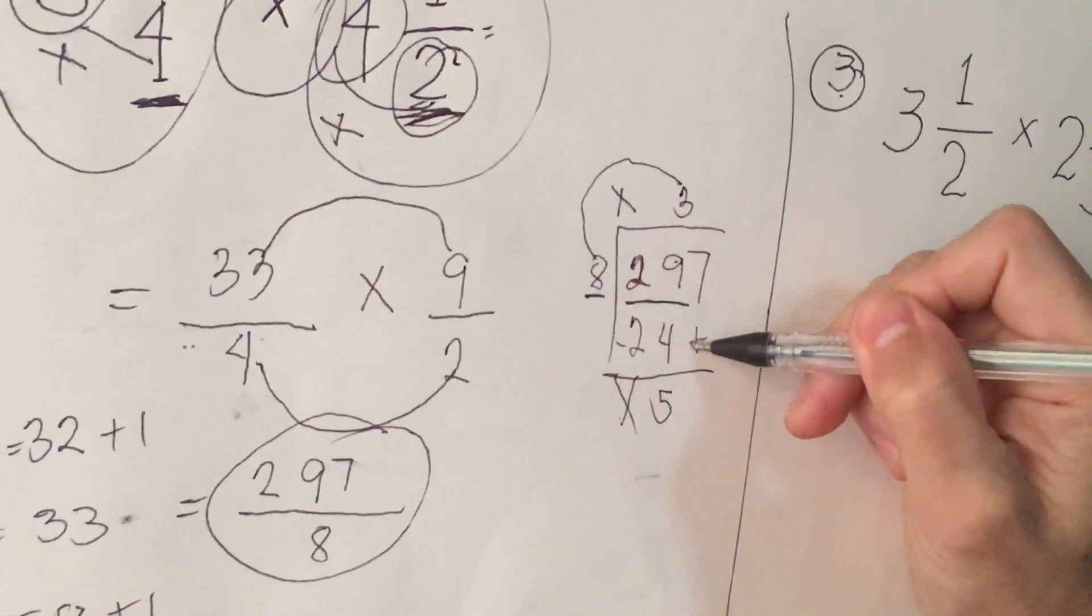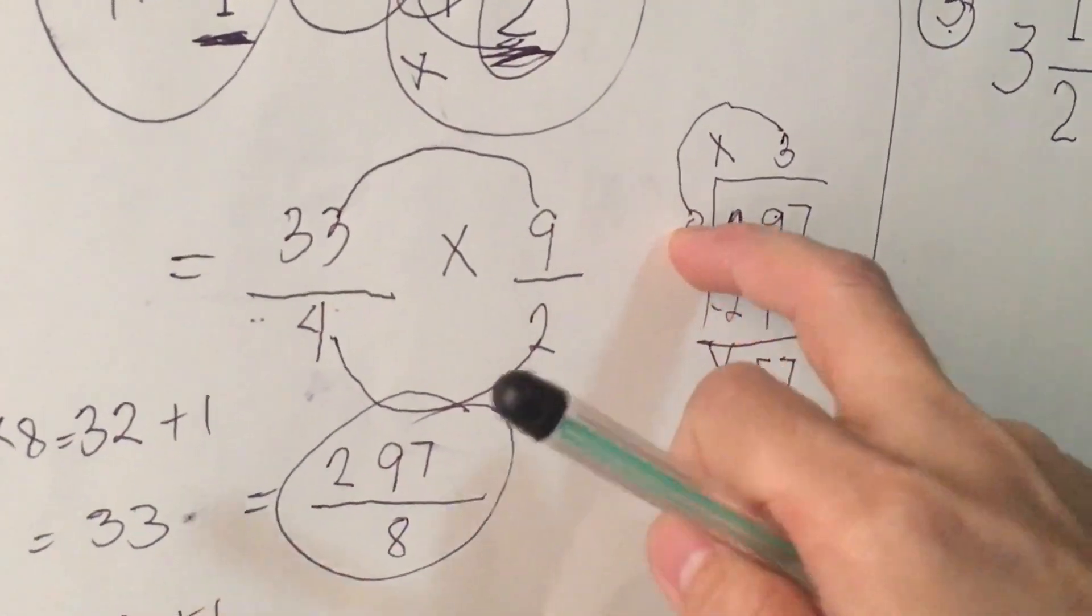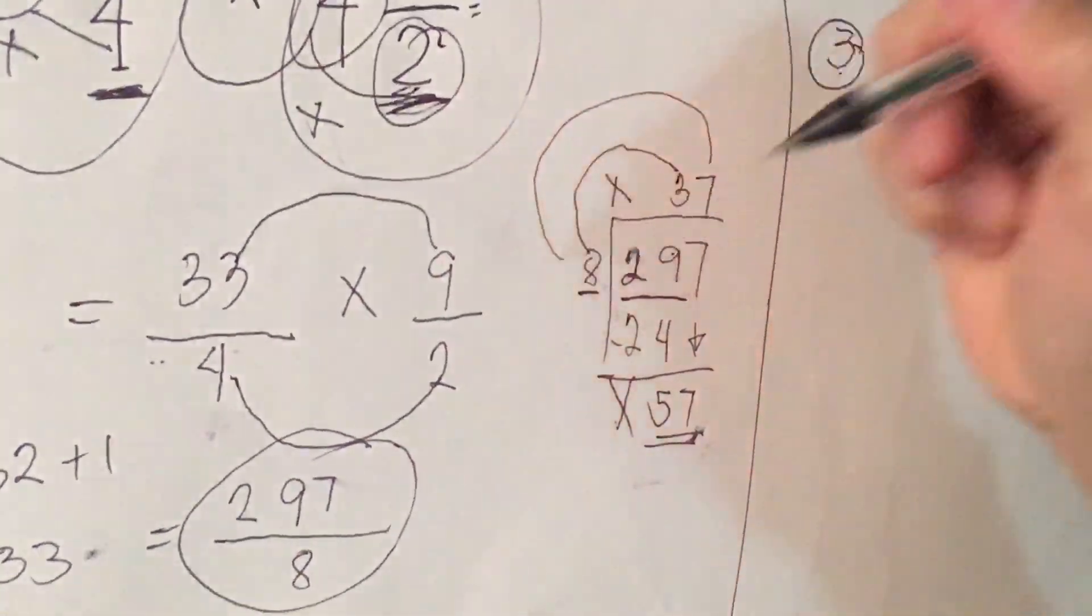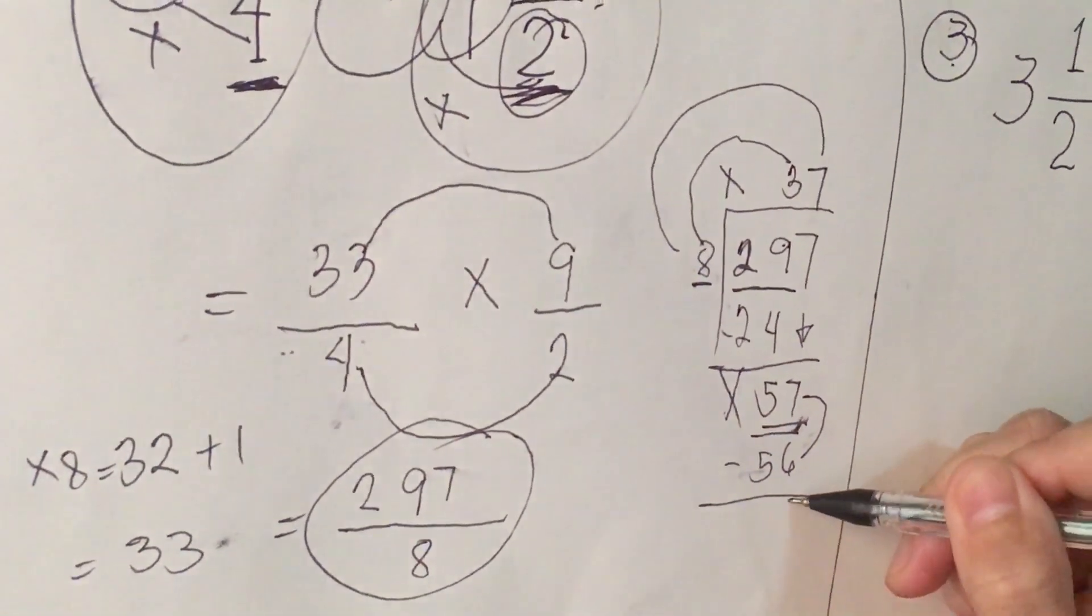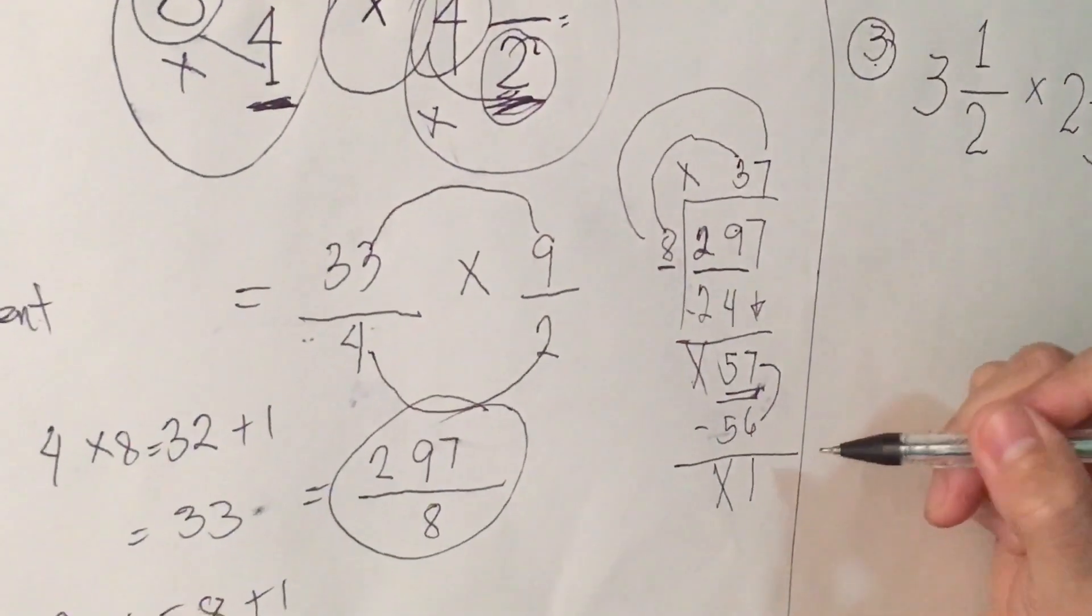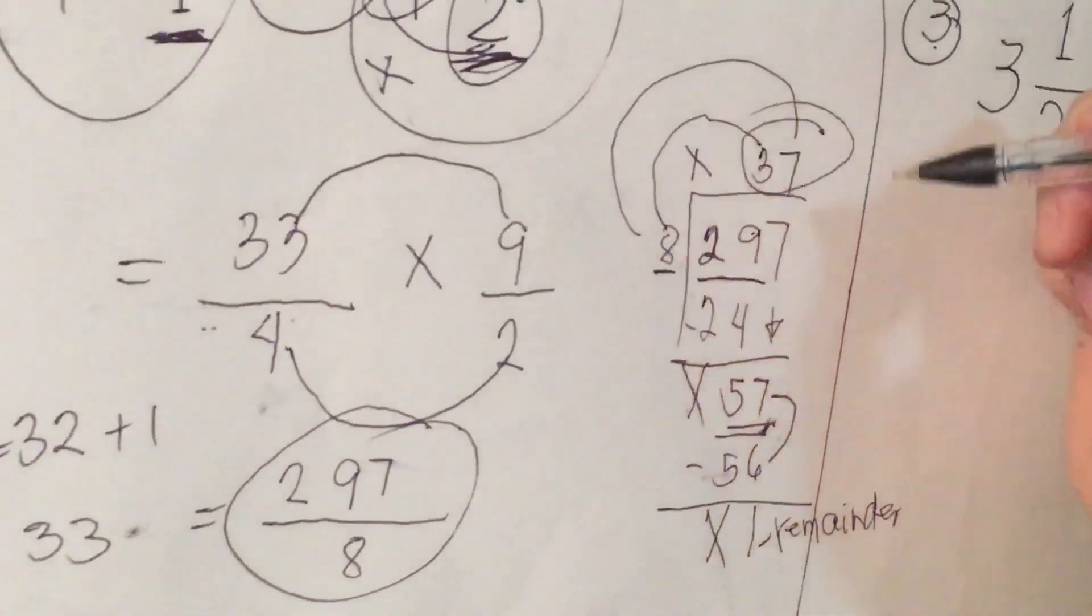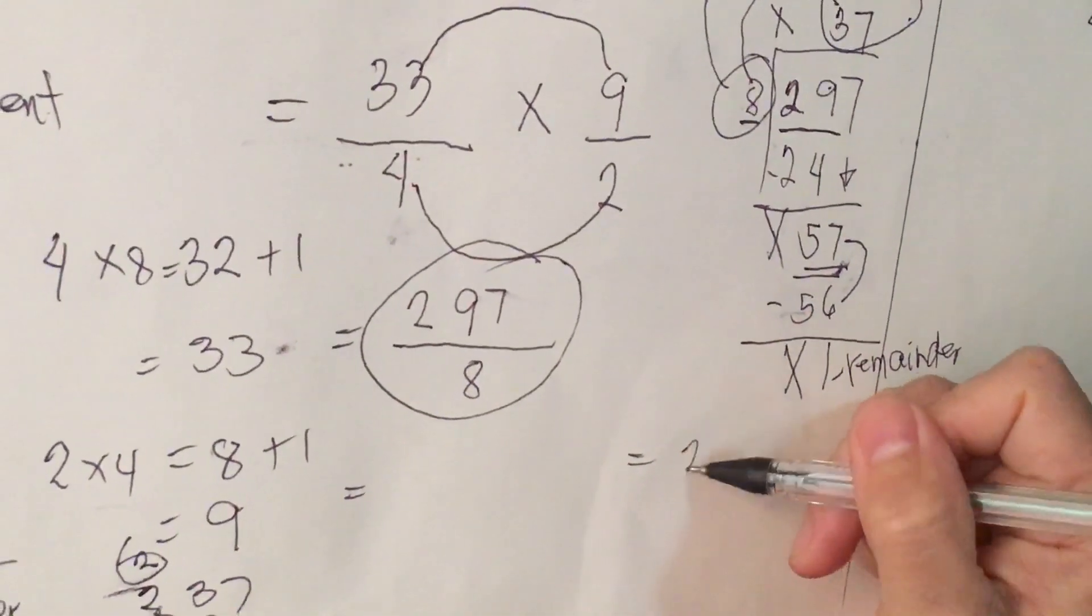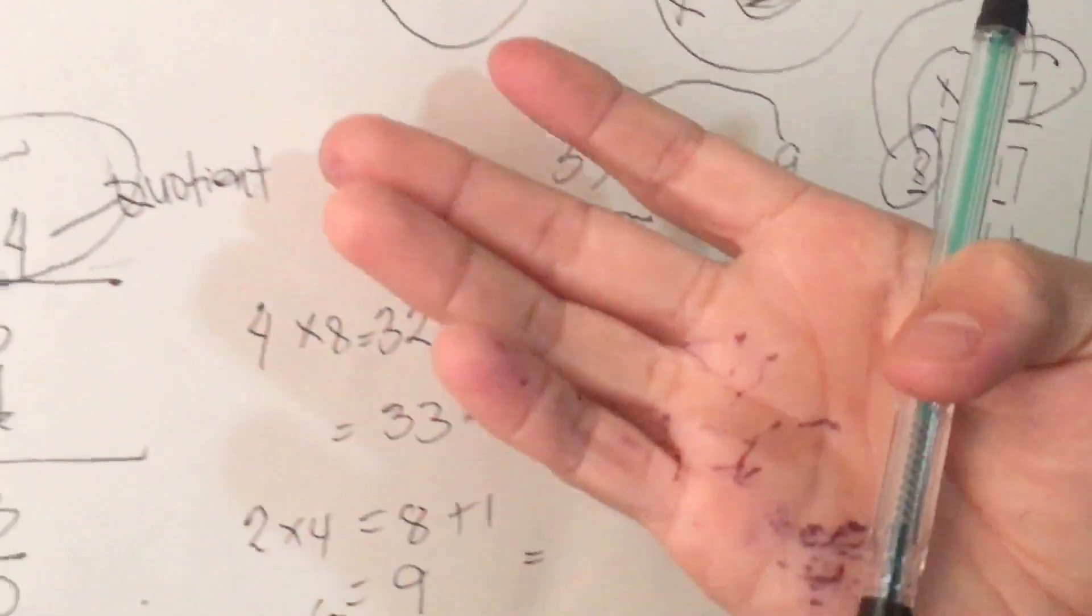Next, I'll bring down 7, so that is 57. We are going to divide to 8. How many 8 in 57? We have 7. 7 times 8, we have 56. Next, we're going to subtract 7 to 6, we have 1. 5 minus 5 is 0. I'm going to put an x here. So 1 is our remainder. 37 is our quotient, 8 is our divisor. We're going to write here 37, 1, 8. This will be our final answer for number 2.